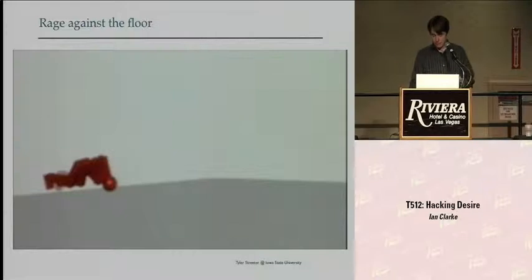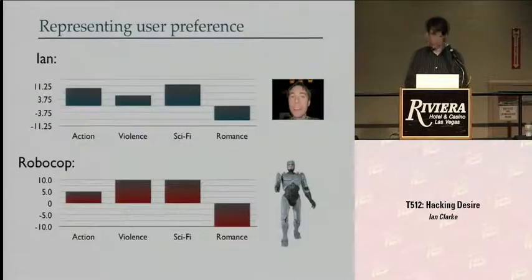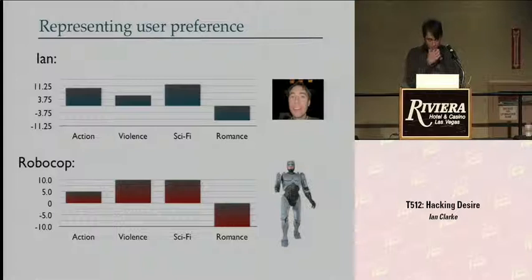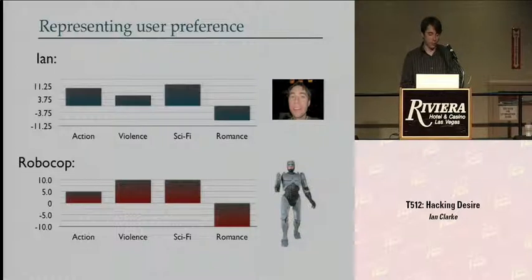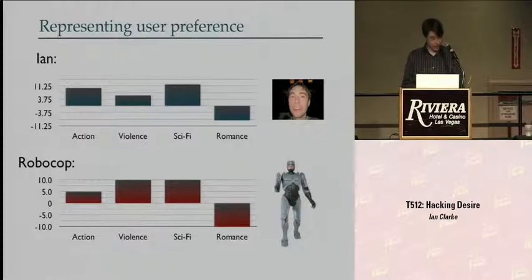So how does the mathematical model work in practice? Taking Robocop as an example, I've broken down my movie preferences along four dimensions: I quite like action movies, violent movies are okay, I really like sci-fi movies, and I do not like romance. Robocop has a decent amount of action, a lot of violence, it's definitely sci-fi, and there is no romance whatsoever.